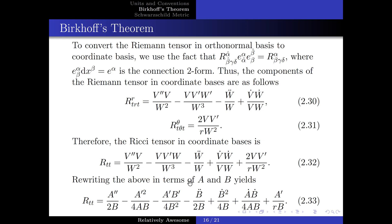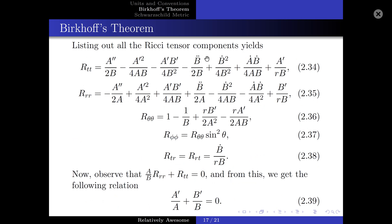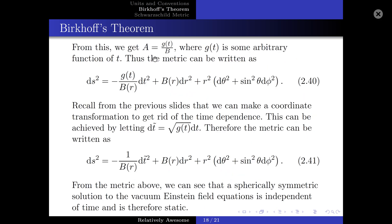Rewriting the above in terms of A and B yields the following. Listing out the other components of the Ricci tensor, we yield five equations. Observe that A over B times R-RR plus R-TT is equal to zero, giving a differential equation from which we get that A is equal to some arbitrary function divided by B. Thus, the metric can be written accordingly. Recall that we can always make a coordinate transformation to remove the time dependence by letting dt-tilde equal square root of g times dt. Therefore, we can see that a spherically symmetric solution to the vacuum Einstein field equation is independent of time and is therefore static.